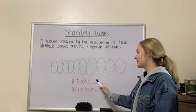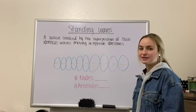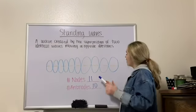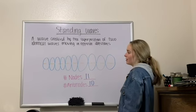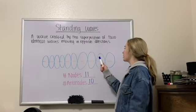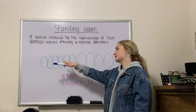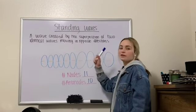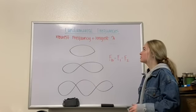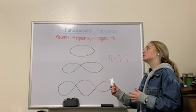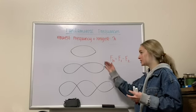Pause this video and see if you can count the number of nodes and anti-nodes in this example. If you got 11 nodes and 10 anti-nodes, you're correct. For nodes, count where the wave disturbance is zero; for anti-nodes, count the maximums.